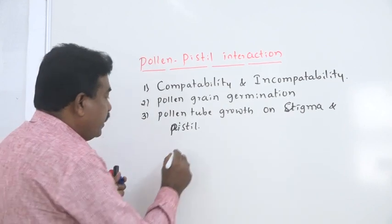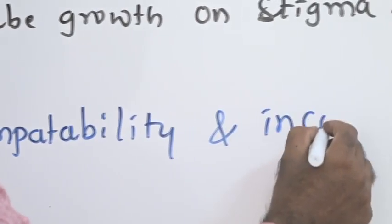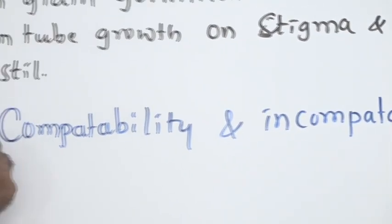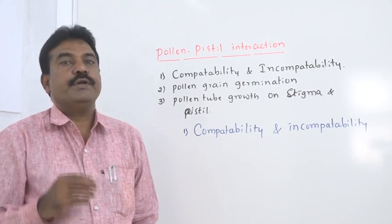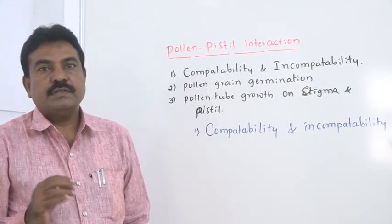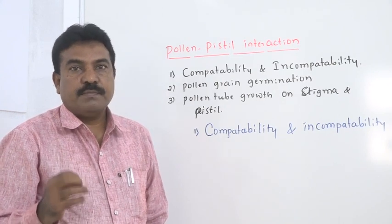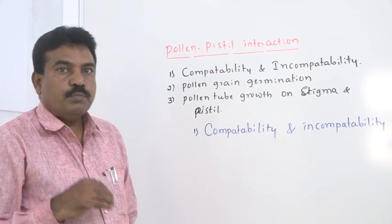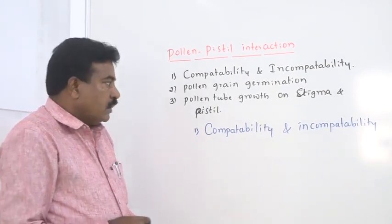We already know how pollination takes place. Generally, pollination may take place by abiotic components like water and wind, or by biotic components like different types of animals — namely insects, birds, ants, bats, even lizards and some mammals. At the same time, pollination is also carried out artificially by human beings, which we call anthropophily.